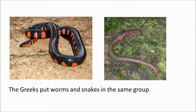Let me give you an example. The Greeks put worms and snakes into the same group because of their common long, thin, vermiform shape. But now we put them in completely different groups — for starters, one is a vertebrate with a backbone and the other is an invertebrate. Modern classifications are a reflection of evolutionary distance between organisms. The common ancestor of the worm and the snake lived a very, very long time ago. They are not closely related at all, despite having the same shape. We are more closely related to a snake than the worm is.